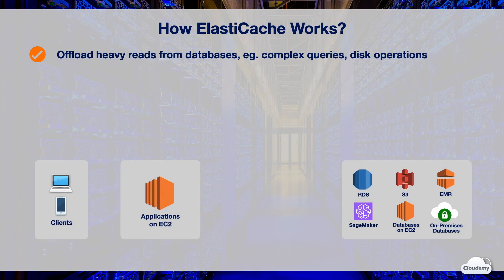Here is how ElastiCache works. Suppose you have an e-commerce website running on EC2 instances that connect to the database and serve web traffic. Every time users request product information, your application on EC2 queries data from the database directly and sends results back to your users.